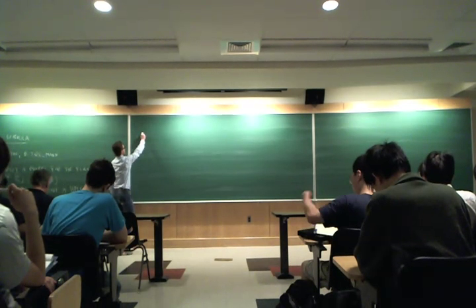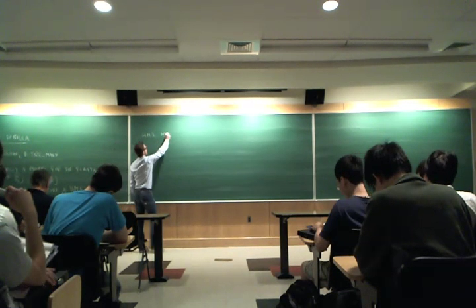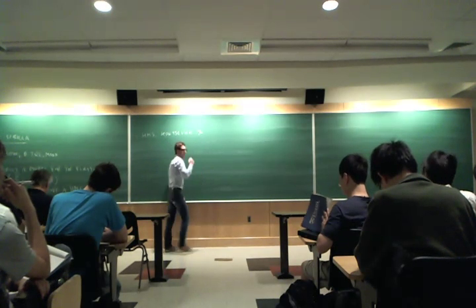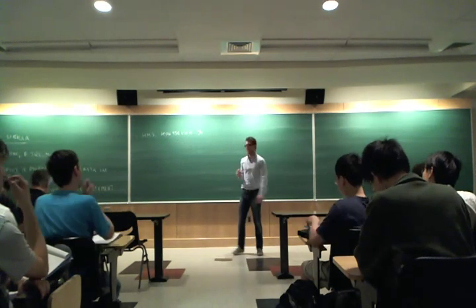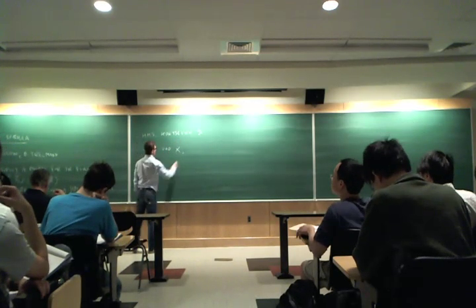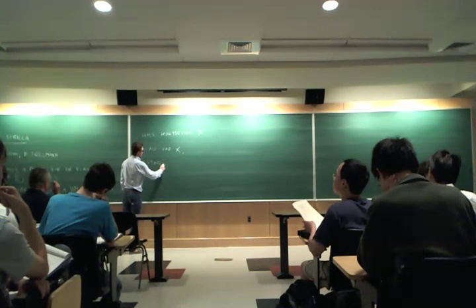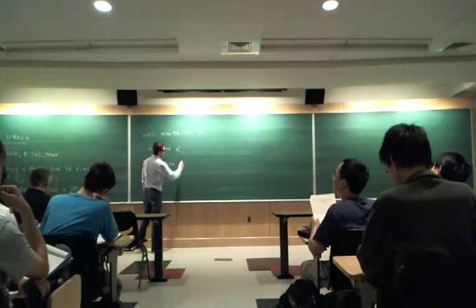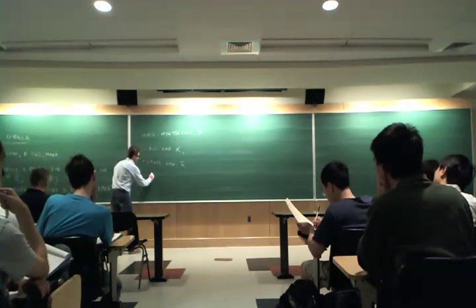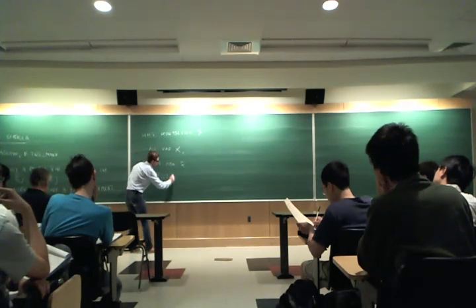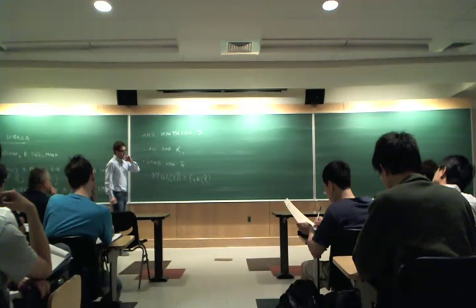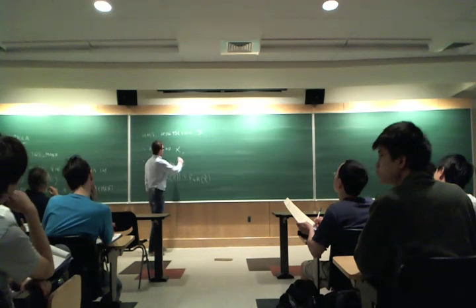Let me remind you of homological mirror symmetry. It is a conjecture that Kontsevich put forward, I think, in 1994. We are supposed to be given an algebraic variety X, a symplectic manifold X tilde. And if X and X tilde are mirror partners, we are supposed to be able to prove that the derived category of coherent sheaves on X is quasi-equivalent to the Fukaya category of X tilde.